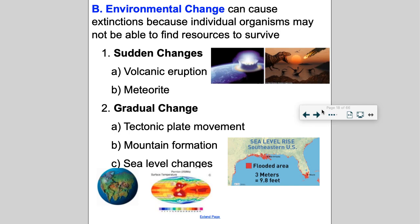We're going to have an increase in sea level changes because the ice caps are melting. Mountain formation — at the top of Mount Everest you would find fossils of seashells, because at one time Mount Everest was on the bottom of an ocean floor. Two plates met and pushed up, and every year Mount Everest gets a little bit taller.